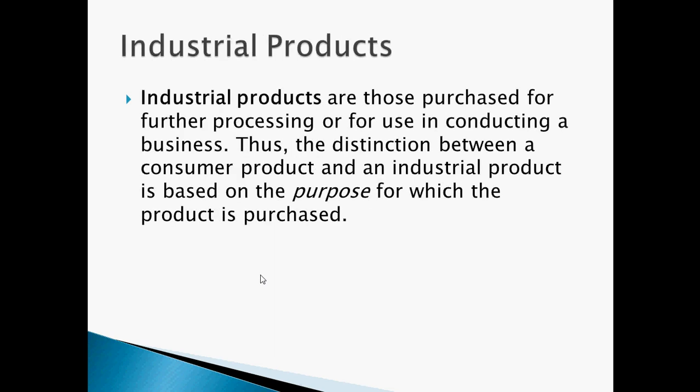Now we'll look at industrial products. Industrial products are those purchased for further processing or for use in conducting a business. The distinction between a consumer product and an industrial product is based on the purpose for which the product is being purchased — one is purchased for final use by the consumer, and one is purchased for use in producing something else.